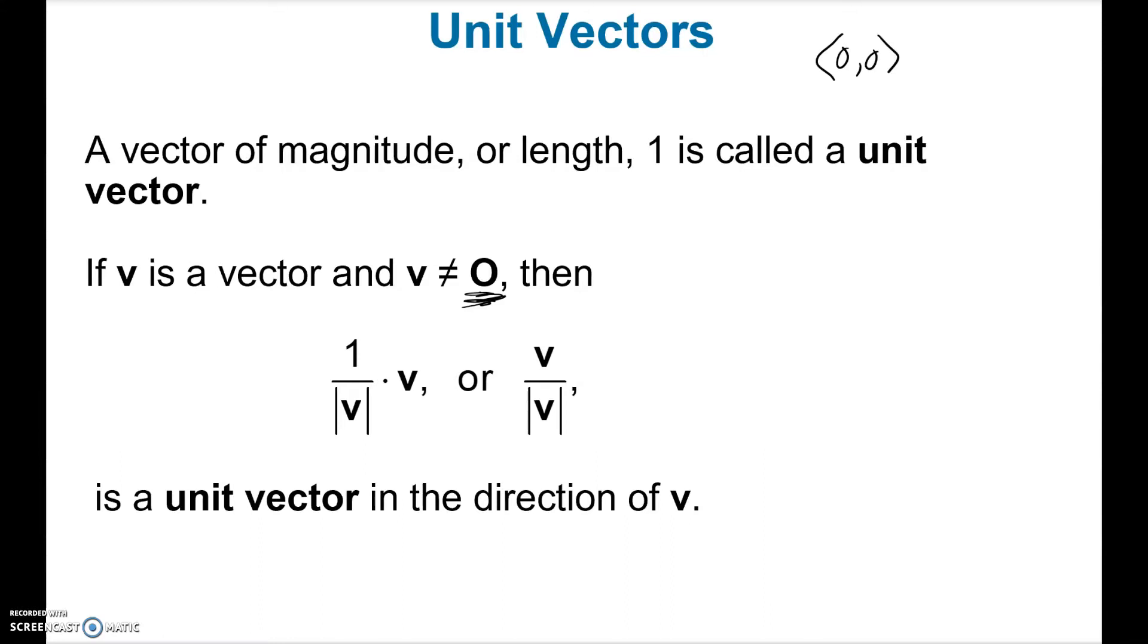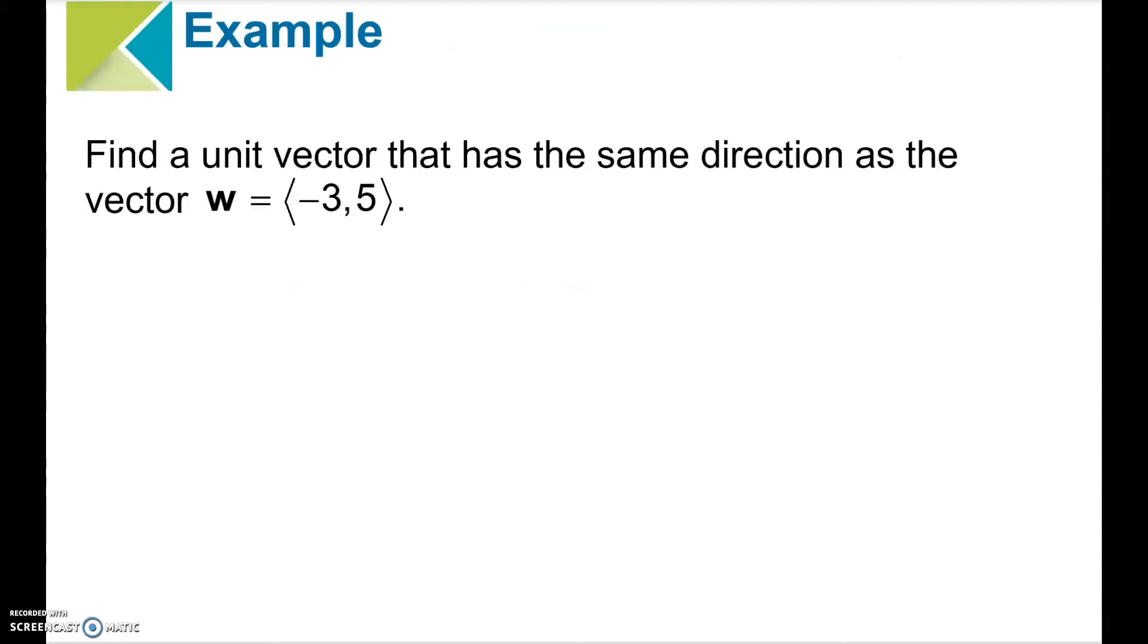So provided that we're not working with the zero vector, then to get a unit vector, if you're given V, this is what you do. You divide it by its magnitude. That's it. So let's see how that works.